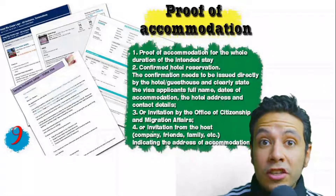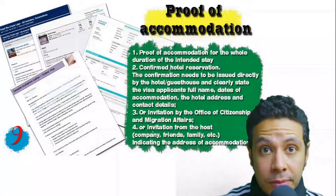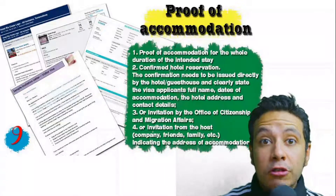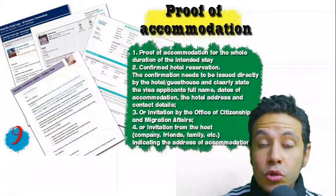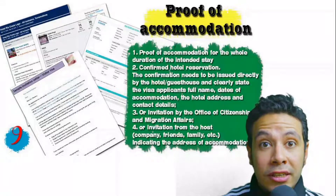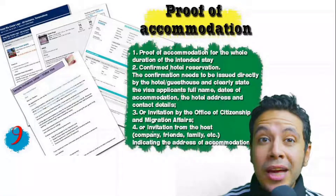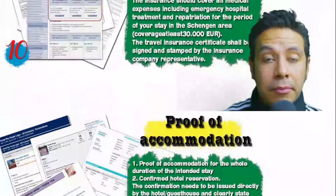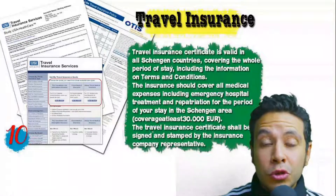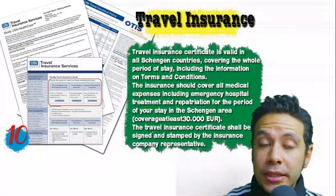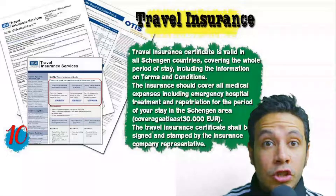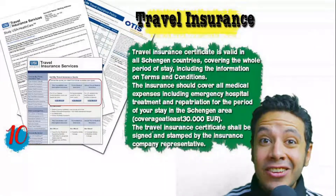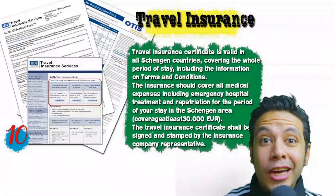You also need proof of accommodation — either a confirmed hotel reservation, an invitation from a host, or an invitation from an organization you are visiting. An initial booking is acceptable, but sometimes a confirmed booking is required. The hotel name, address, and contact number must be mentioned. If invited by a person, the invitation letter should be mailed directly to the embassy or submitted with a copy of that person's passport. Many countries, especially Schengen area countries, also require travel insurance with coverage of at least 30,000 euros.